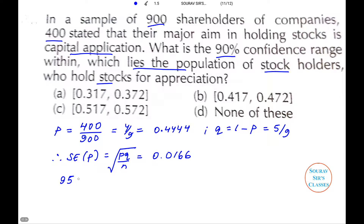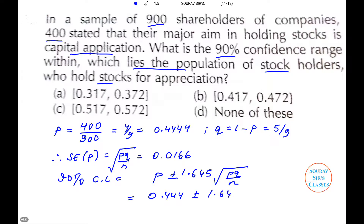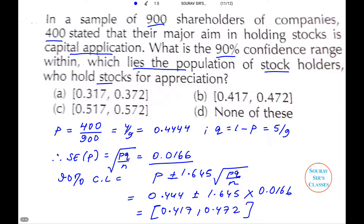Now we need to calculate the 90% confidence interval. The 90% confidence limit is equal to P ± 1.645 × √(PQ/N). Substituting the values: 0.4444 ± 1.645 × 0.0166, the answer comes out to 0.417 and 0.472. This is a perfect match to option B, so B is the correct answer to this question.